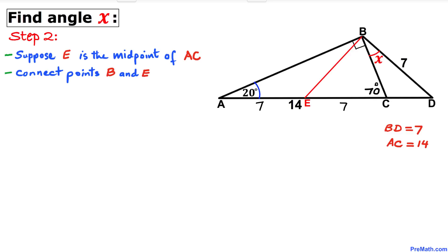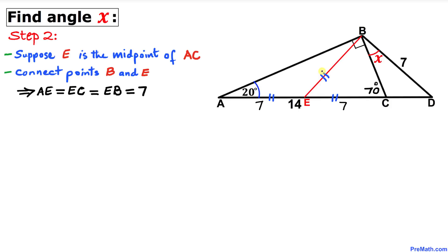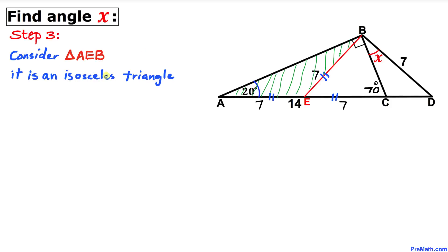Since E is the midpoint, AE distance is 7 and EC distance is 7 as well, meaning these two segments are equal in length. According to the rectangle diagonal property, all four half-diagonals are equal, so line segment EB is going to be 7 units as well.